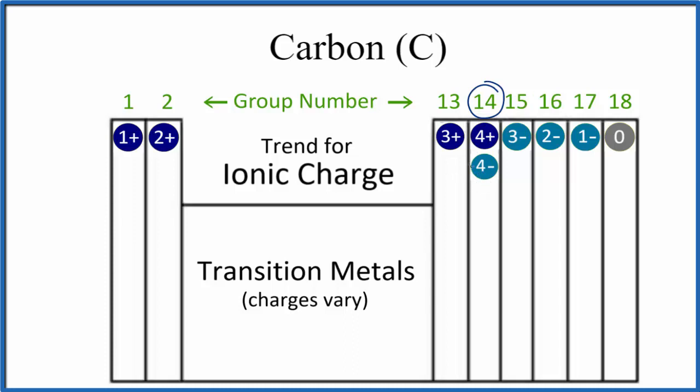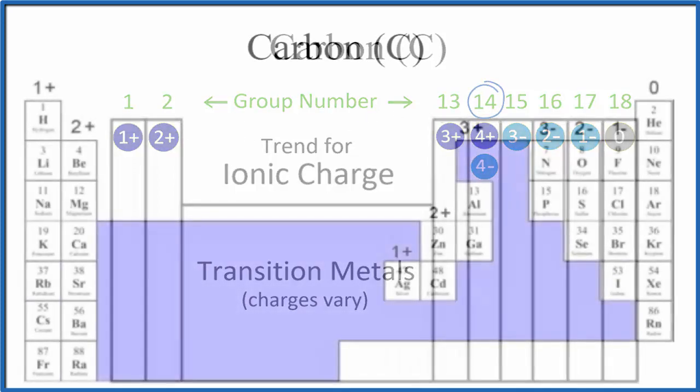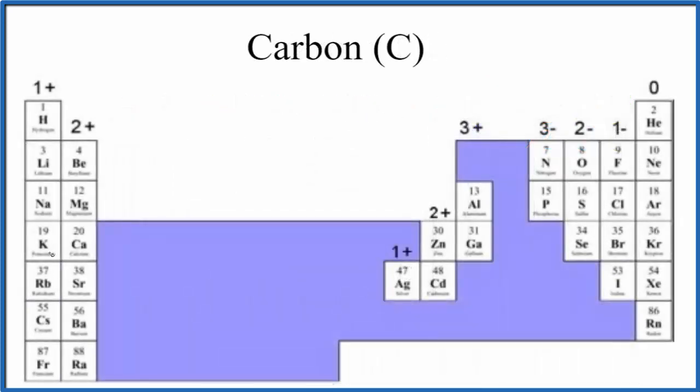If we looked at the periodic table with a little more detail, we can see that the elements that are visible will always have this ionic charge when they bond. They will form ions with these charges here.